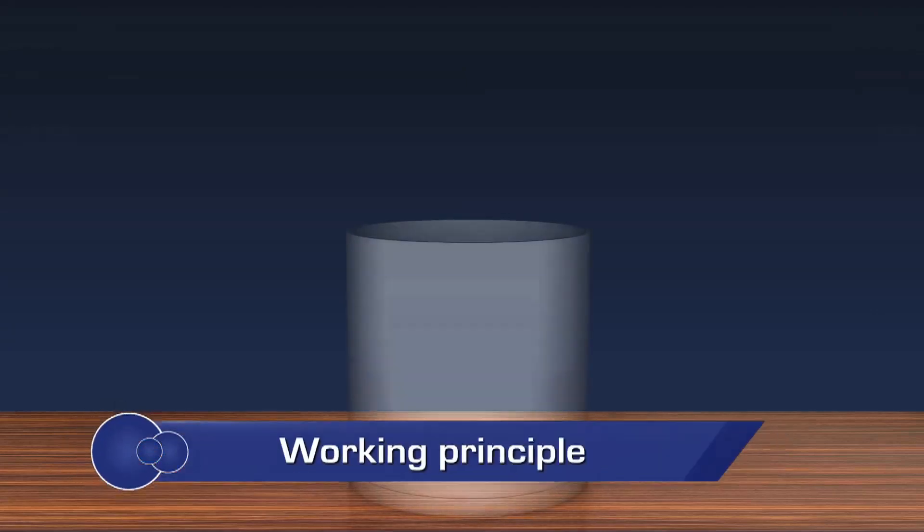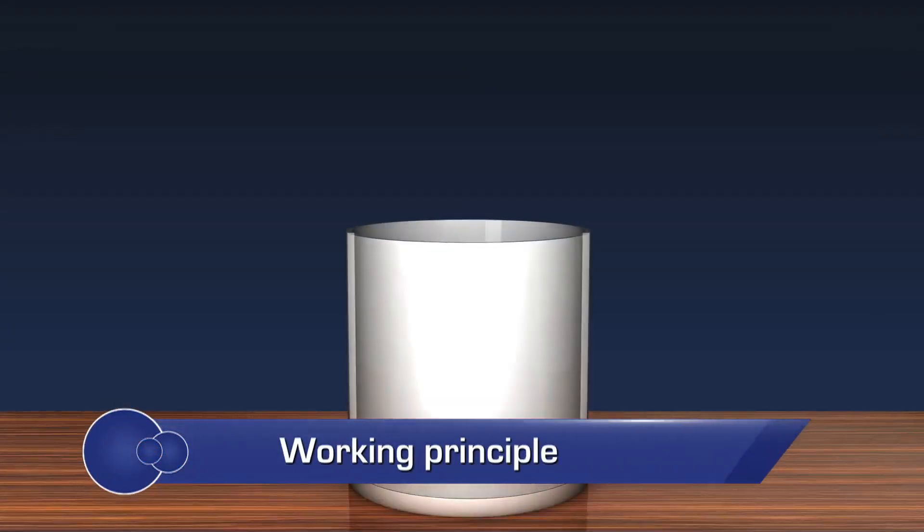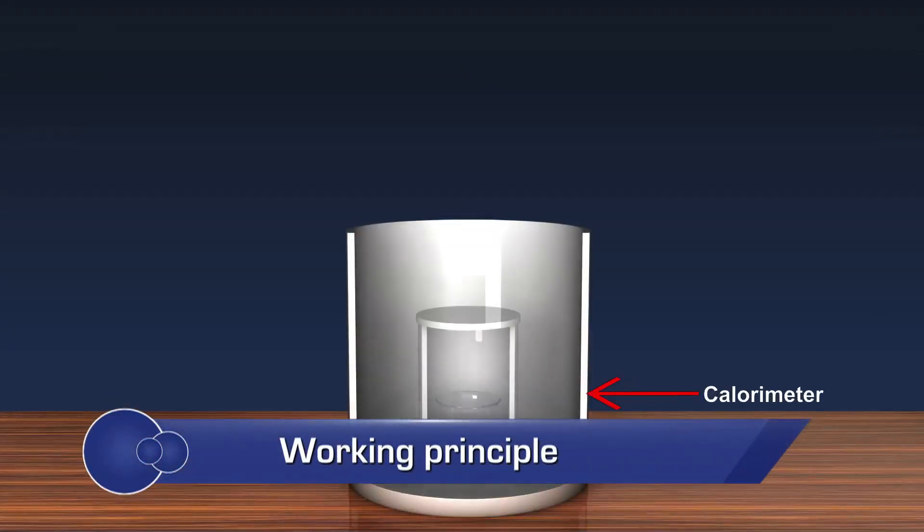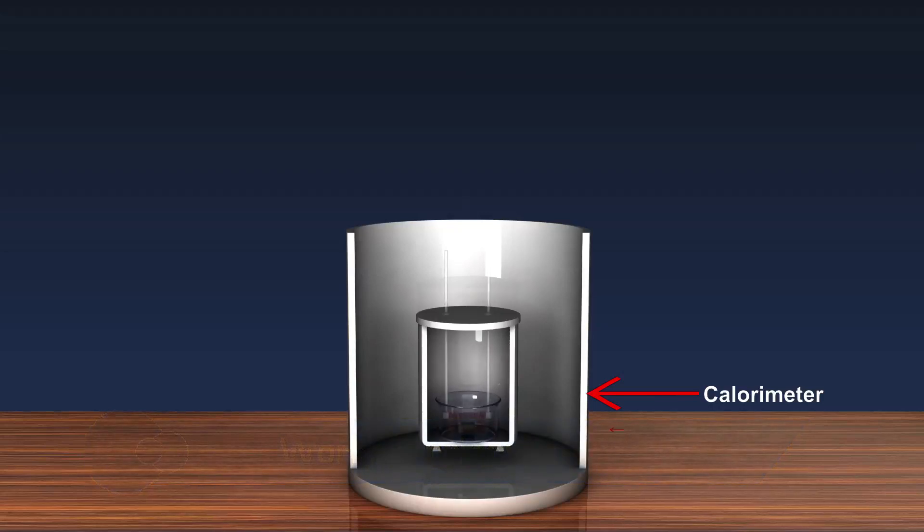The major parts of a bomb calorimeter are an outer copper shell called calorimeter and the inner shell made of stainless steel where the fuel burns called bomb.